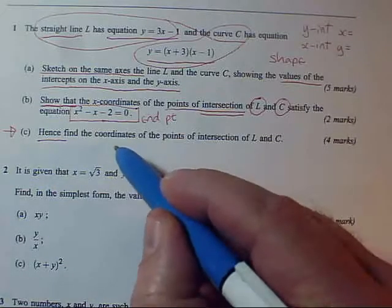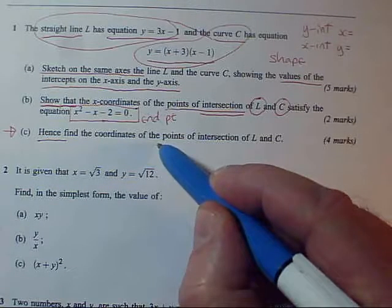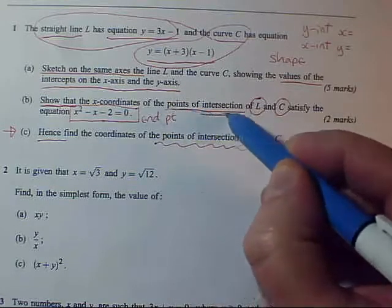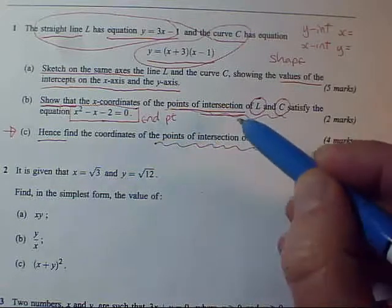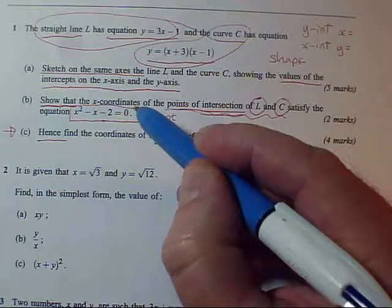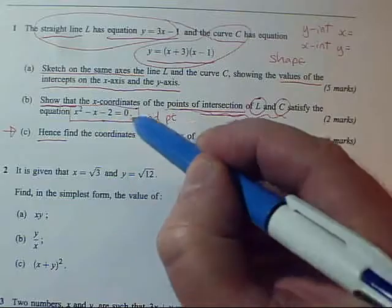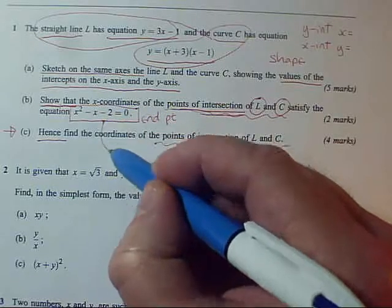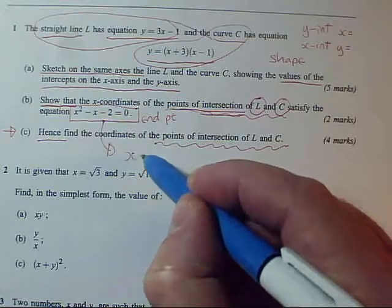It goes on to say, find the coordinates of these points of intersection of L and C. Well, that's just repeating what it was saying here. We've done the work on using the word intersection, solve simultaneous equations. So this equation applies to the points of intersection. So all I need to do is solve that and get two values for x.